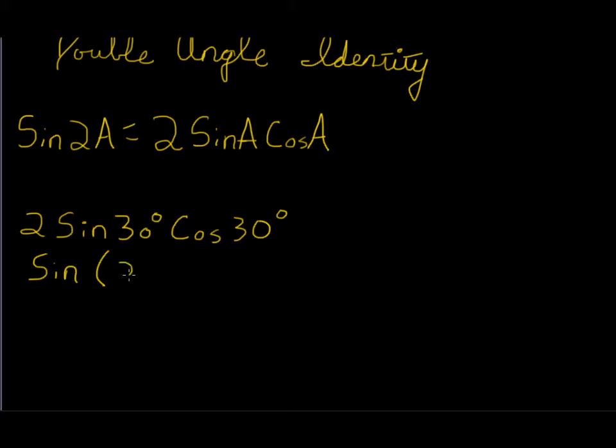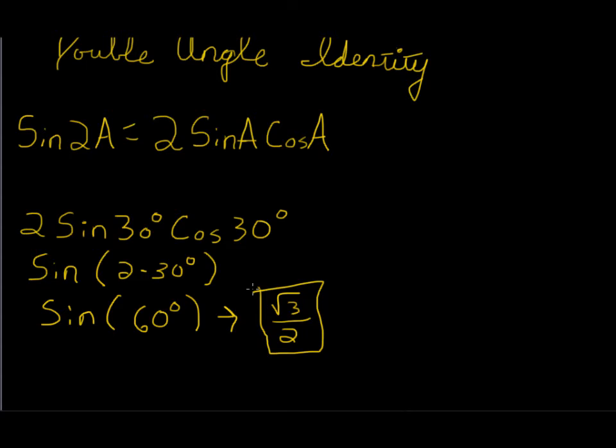Start with the sine of 2 times 30 degrees, which will lead us to the sine of 60 degrees. As you know from your unit circle, the sine of 60 degrees is root 3 over 2. And there's your final answer.